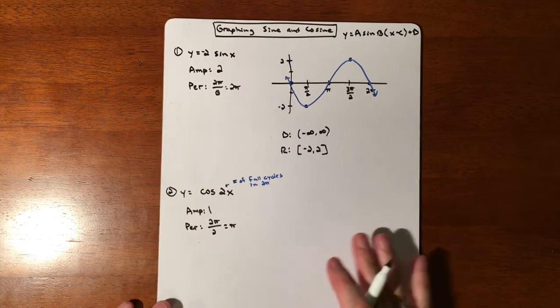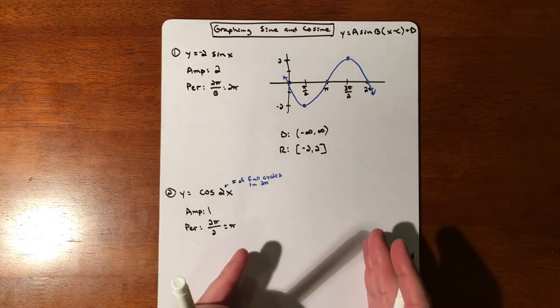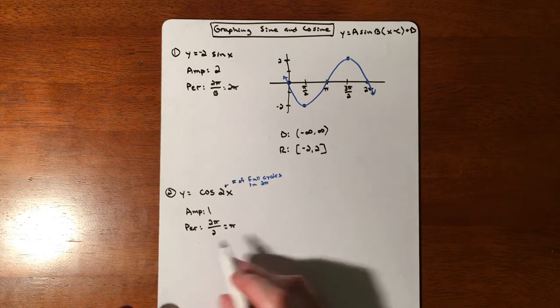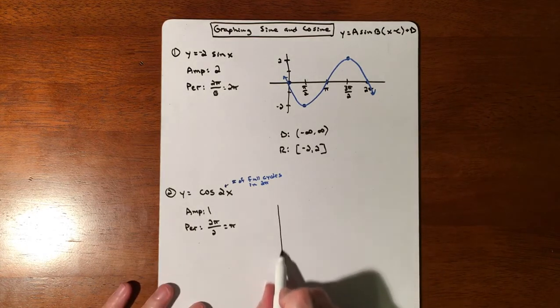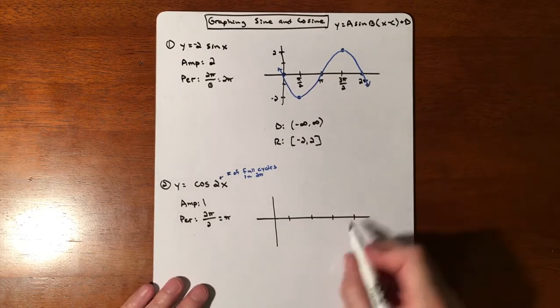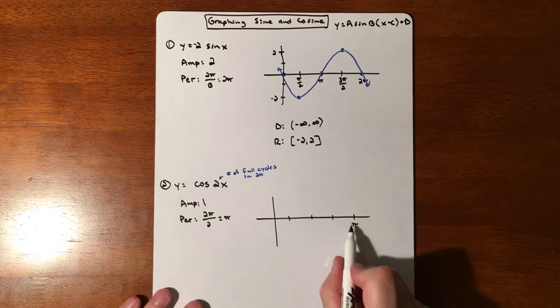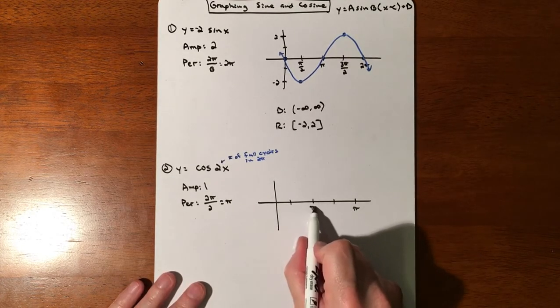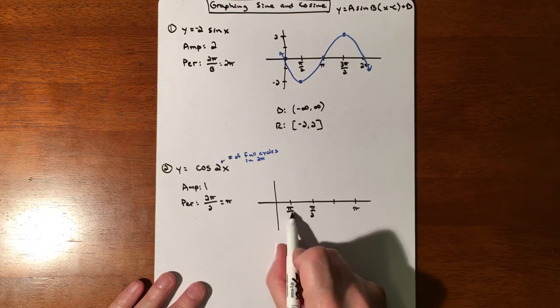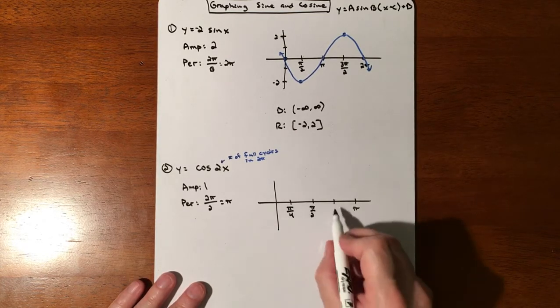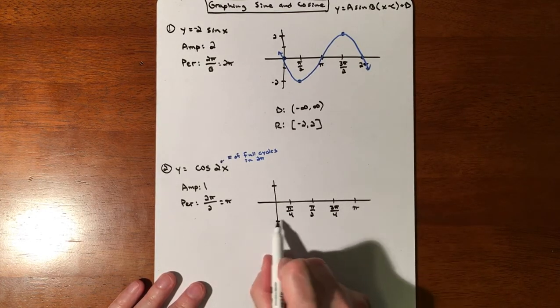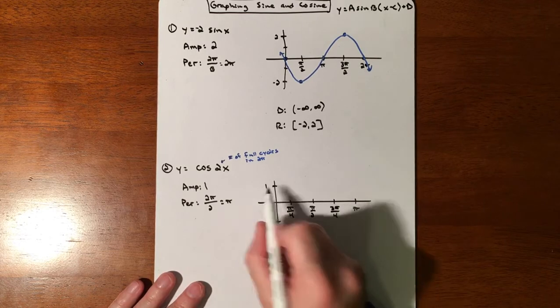And our period is going to be 2π divided by the 2. That 2 refers to the B. So we divide it by 2, so our new period is π. Which hopefully makes sense that if two cycles would have existed from 0 to 2π, then if we need one full cycle, it's gonna be half of that. So if we graph that, we're going 1, 2, 3, 4. But this time, rather than putting 2π, I'm putting π. So if we cut it in half, we get π over 2. We cut it in half—half of a half is a fourth. So 1 fourth, 2 fourths, 3 fourths.